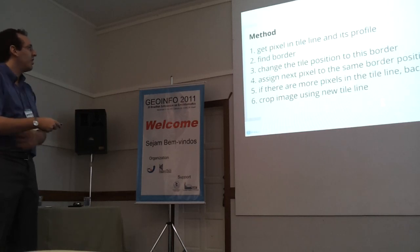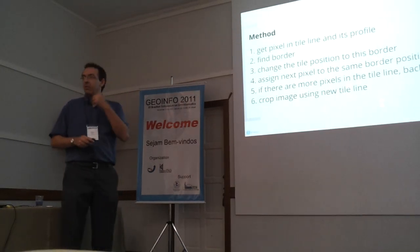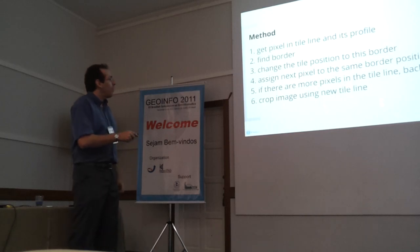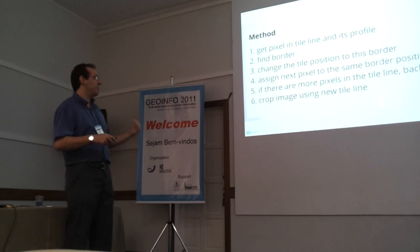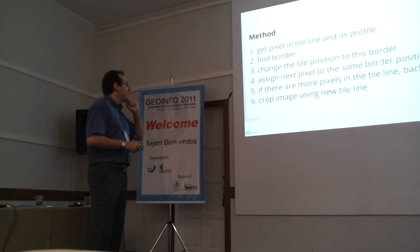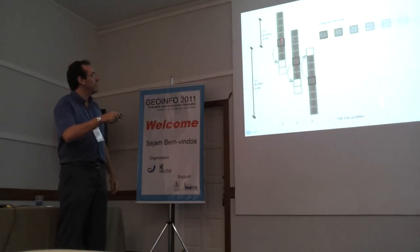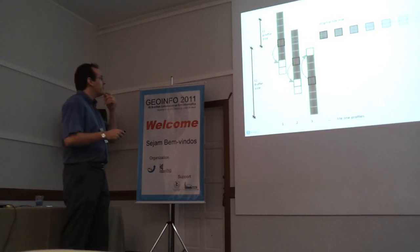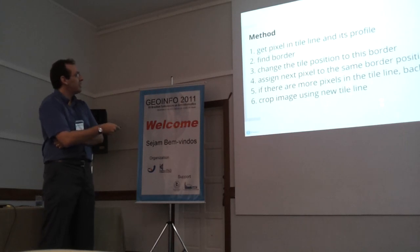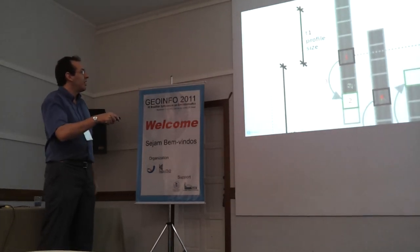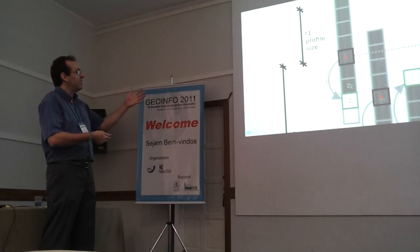Now I will show the method used to find that line, which involves roughly six steps. First, we take a pixel in the tile line — we process pixel by pixel. We will find a border considering that pixel, and then move the original tile line to that position. We then assign the next pixel to the same border position. To illustrate: considering the original tile line as the blue line, we find the border of the first pixel by defining what I call a profile — the central pixel and its neighbors along that line.